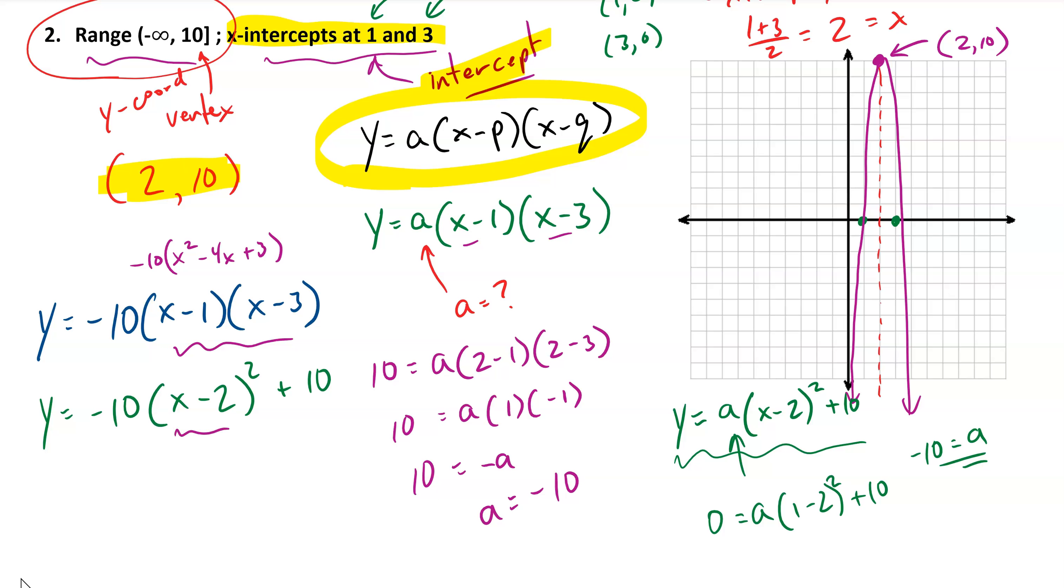In the vertex form expression, I need to multiply out this binomial. I need to square the binomial, so I get -10(x squared minus 4x plus 4) plus 10. And both of those expressions, if we distribute the -10, both of those expressions simplify to the same standard form equation: -10x squared plus 40x minus 30.